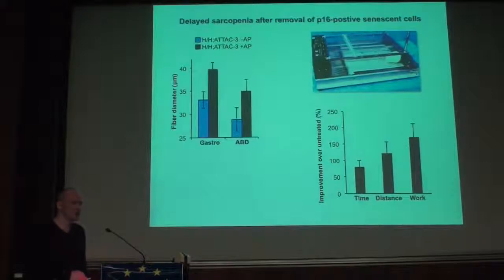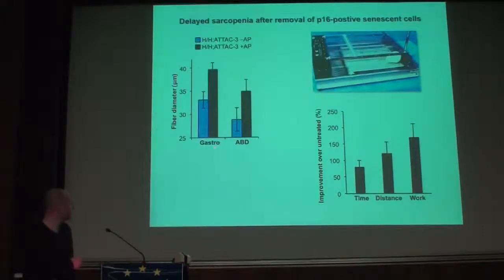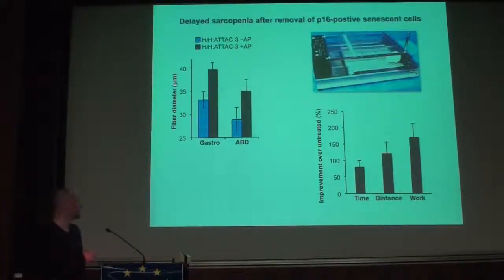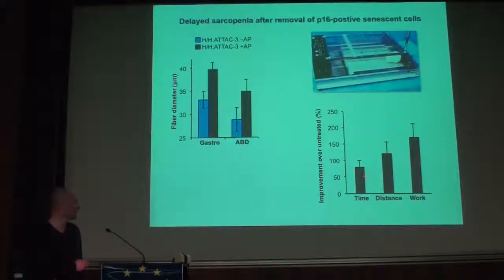As we saw delayed lordokyphosis, we also examined muscle fiber diameters of the gastrocnemius and abdominal muscles. Treated animals have bigger muscle fibers than untreated animals in most cases, indicating that sarcopenia is delayed in treated compared to untreated animals. On the treadmill, treated animals were able to run longer, travel more distance, and perform more work, indicating improved physical fitness.